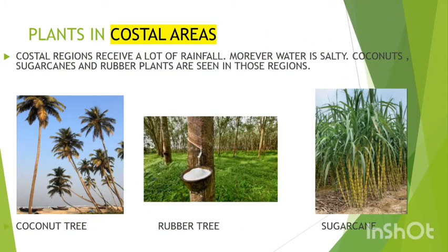Plants in coastal areas. Coastal regions receive a lot of rainfall. Moreover the water is salty. Coconuts, sugar cane, and rubber plants are seen in those regions.